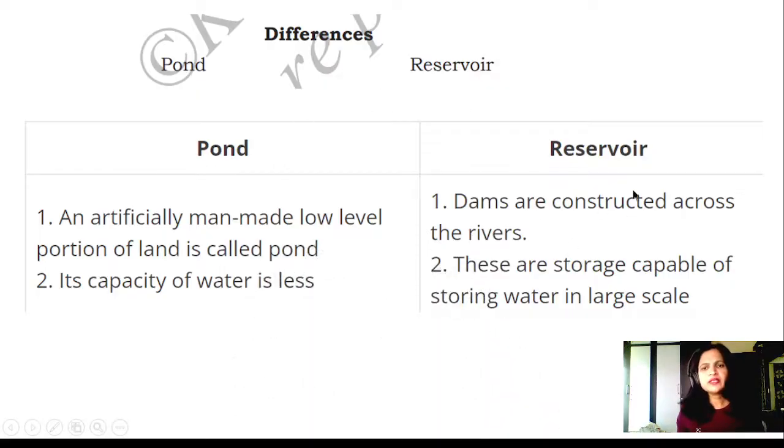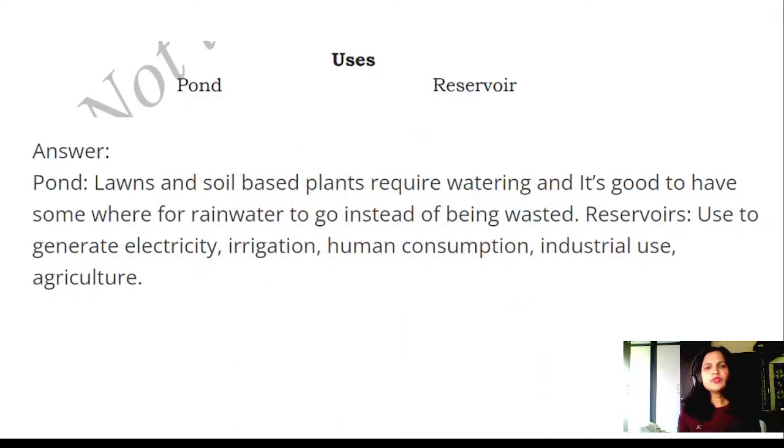Differences between pond and reservoir: An artificially man-made low-level portion of land is called a pond. Its capacity of water is less. Dams are constructed across rivers. These are capable of storing water on a large scale. Uses of pond and reservoir: Ponds - lawns and soil-based plants require watering and it's good to have somewhere for rainwater to go instead of being wasted. Reservoirs are used to generate electricity, irrigation, human consumption, industrial use, and agriculture.